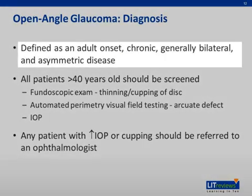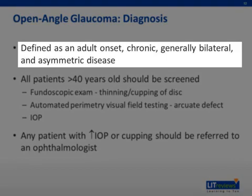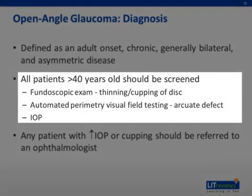Open angle glaucoma is defined as an adult onset, chronic, generally bilateral, and asymmetric disease. It is characterized by glaucomatous optic nerve damage, evidenced by thinning, cupping, or notching of the disc, and characteristic visual field deficits — namely an arcuate defect, nasal step, or paracentral scotoma.